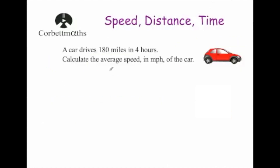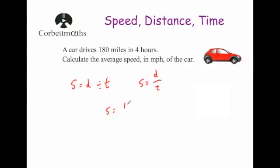Let's look at some exam questions. A car drives 180 miles in four hours — find its average speed in miles per hour. Speed equals distance divided by time, so speed equals 180 divided by 4, which equals 45. The car is traveling at 45 miles per hour. We can check: four lots of 45 is 45, 90, 135, 180 — yes, in four hours it covers 180 miles.